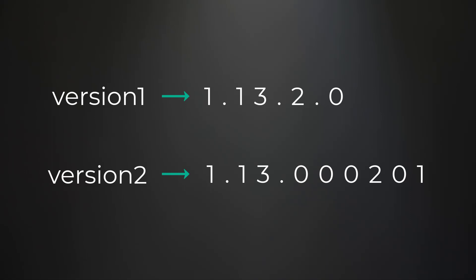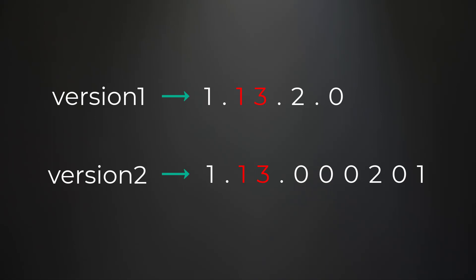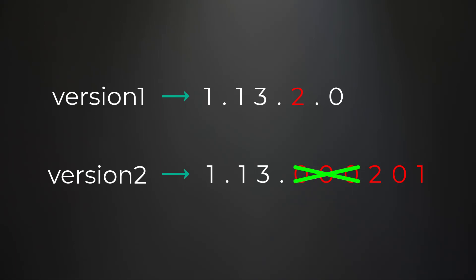Let's walk through the first example. We have version one as '1.13.2.0' and version two as '1.13.000201.' In this example version one is less than version two. Looking at revisions left to right: the zeroth revision is '1' for both — same. The next revision is '13' for both — same. Then we compare '2' and '000201.' We can drop leading zeros, so 201 is greater than 2, meaning version two is greater than version one.